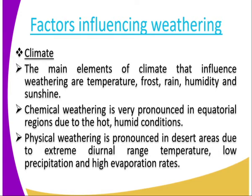Chemical weathering is very pronounced in equatorial regions due to the hot and humid conditions. Physical weathering is pronounced in arid areas due to extreme diurnal temperature range — very high temperatures during the day and very low temperatures at night. Also, in arid areas, there is low precipitation with a high evaporation rate, thus resulting in physical weathering.